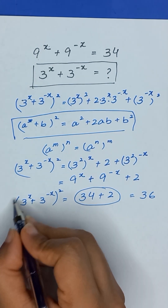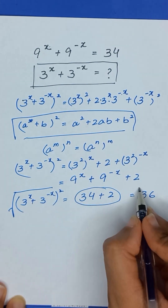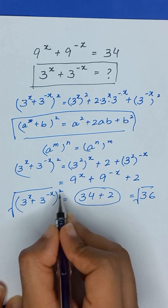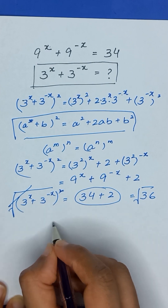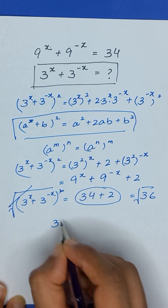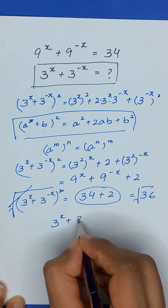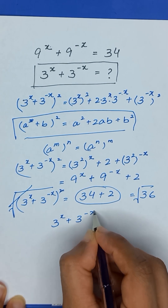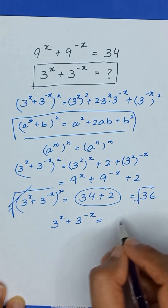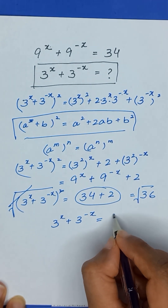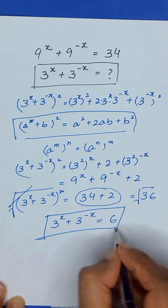Now, to remove the square, we apply a square root on both sides. The square and square root cancel out, and the value of 3 to the power x plus 3 to the power minus x equals the square root of 36, which is 6. Thanks for watching!